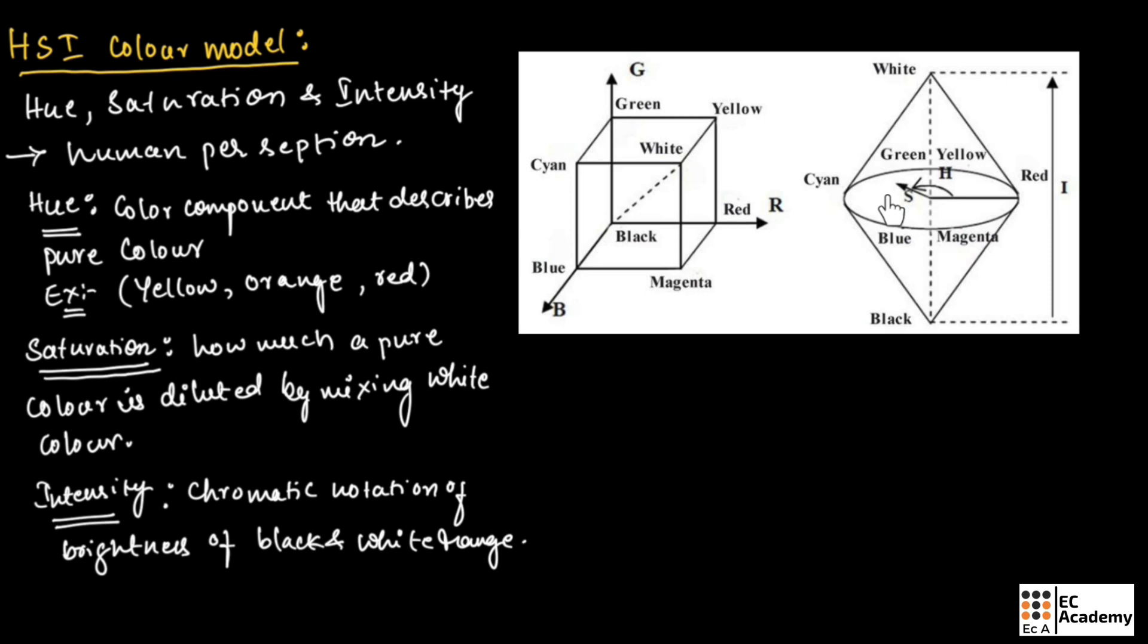Now let us consider a point in the cube. The distance from the intensity axis up to this point we call saturation, represented as S in the cube. This cube describes hue, saturation, as well as intensity, so that's why this cube is known as the HSI color cube.